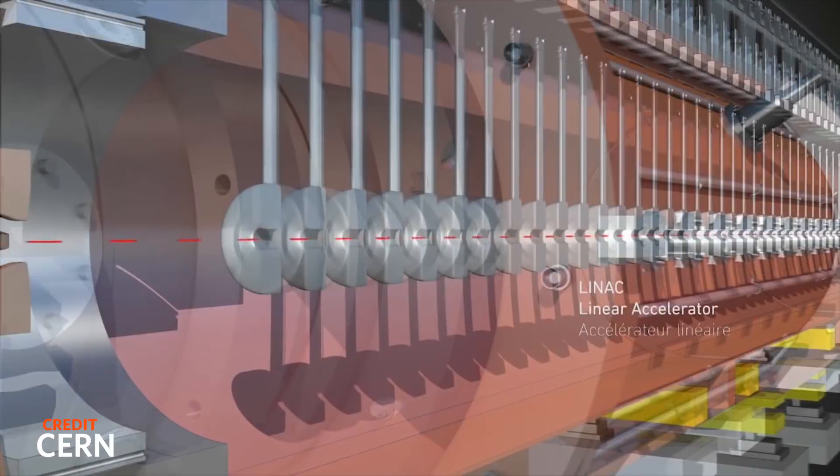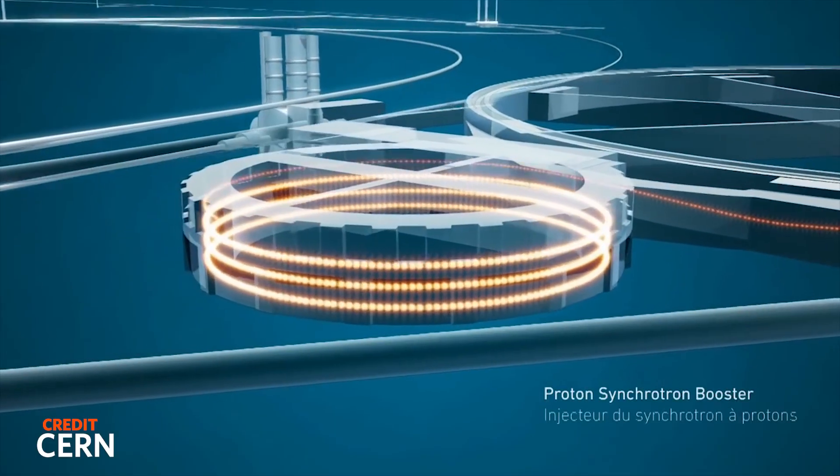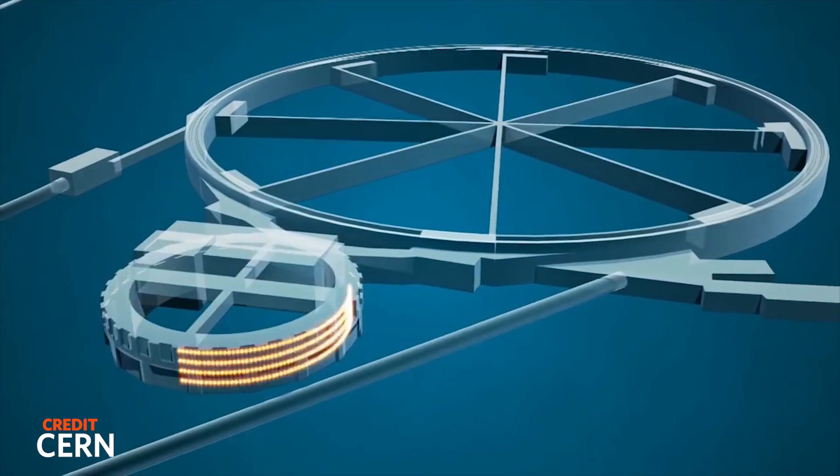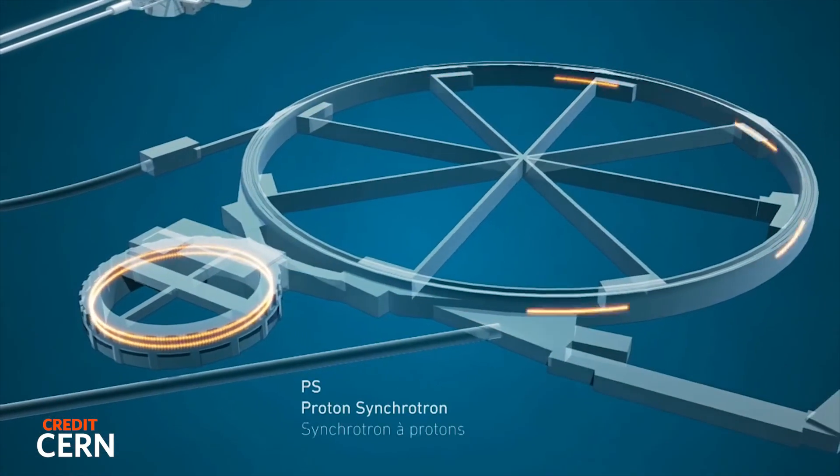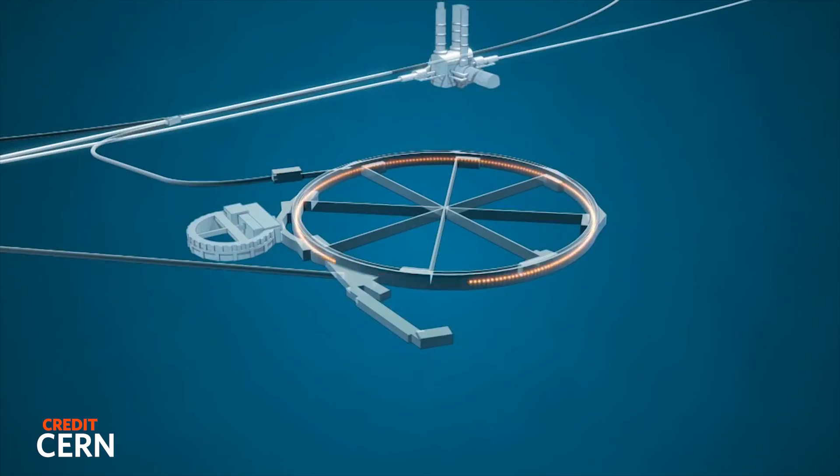Protons start off by traveling down a linear tube where electromagnetic fields give them a constant push forward. From there, they enter into a series of loops, with each loop giving a bit more speed to them before they're injected into the 26-kilometer-long ring of the LHC.